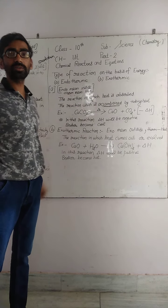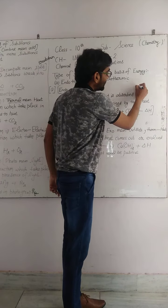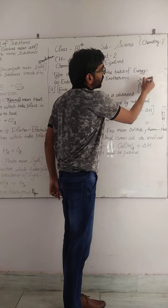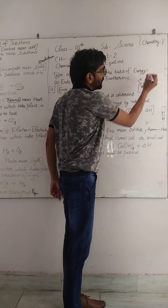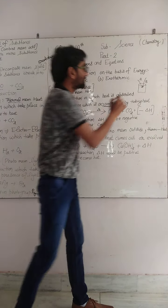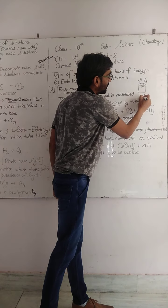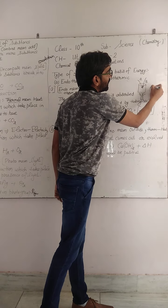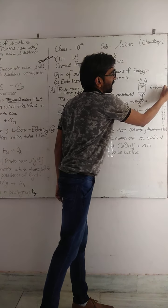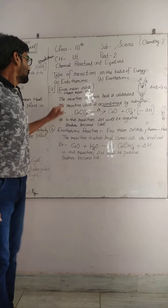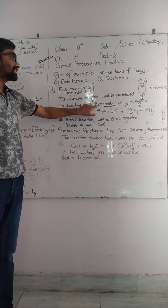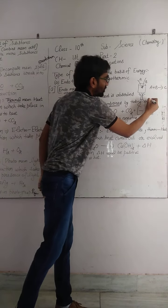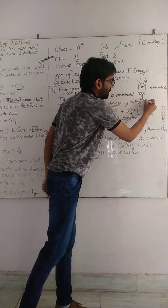Jis reaction mein heat absorbed ho, jaise hum beaker ke andar A aur B do substances ko milate hain to reaction occur nahi hoti. Isliye heat deni padti hai — jab hum is beaker ko garam karenge tab yeh reaction occur hogi: A plus B milkar C aur D banenge. Reaction which is accompanied by taking in heat.